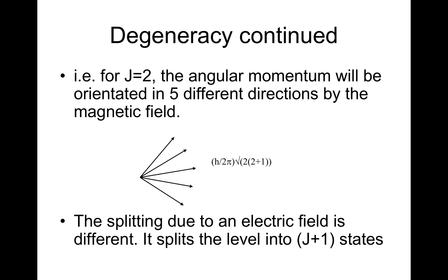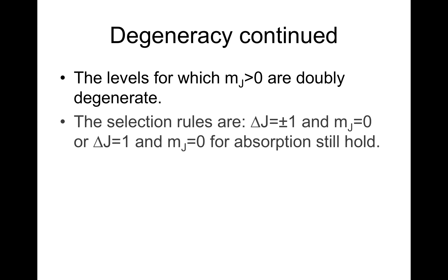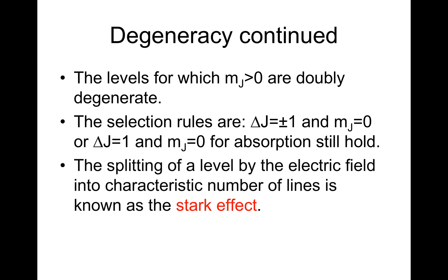The splitting due to an electric field is different. It splits the level into j plus 1 states. The levels for which mj is greater than 0 are doubly degenerate. The selection rules are still delta j equals plus or minus 1 and delta mj equals 0 for absorption. The splitting of levels by the electric field into a characteristic number of lines is known as the Stark effect.